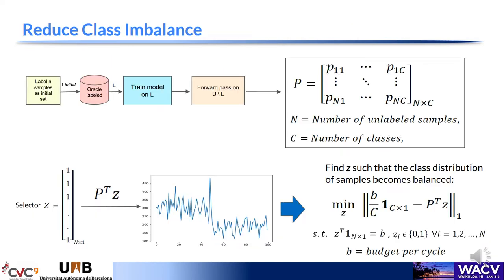Assuming the test dataset is uniform, we propose to reduce the imbalance in the selected samples by using the probability metrics given by the model. In the probability metrics P, the rows correspond to the unlabeled samples and the columns correspond to the categories. If we select all the unlabeled samples, our sampling is imbalanced. Therefore, we look for an optimal selection such that the class distribution becomes balanced.